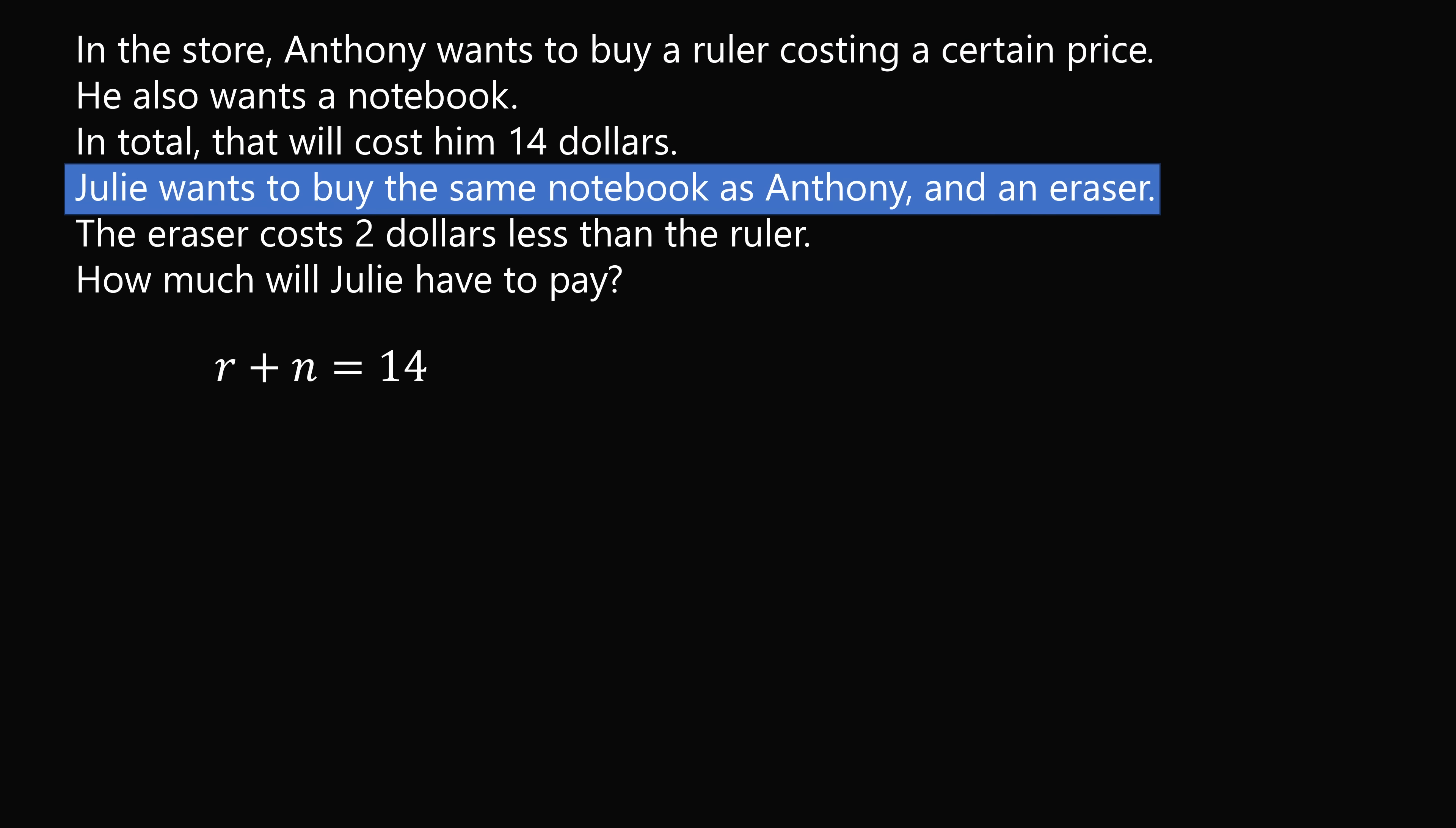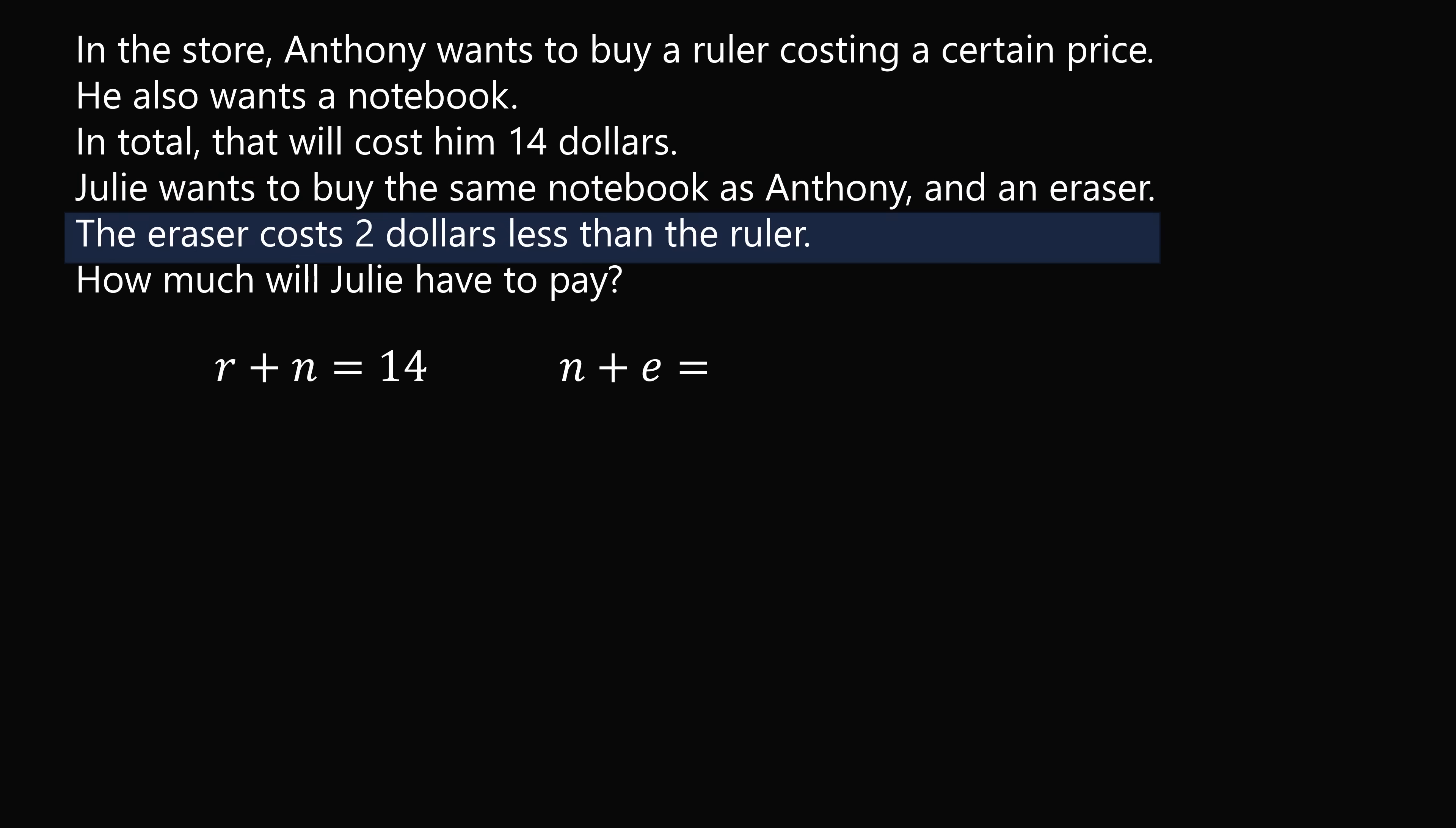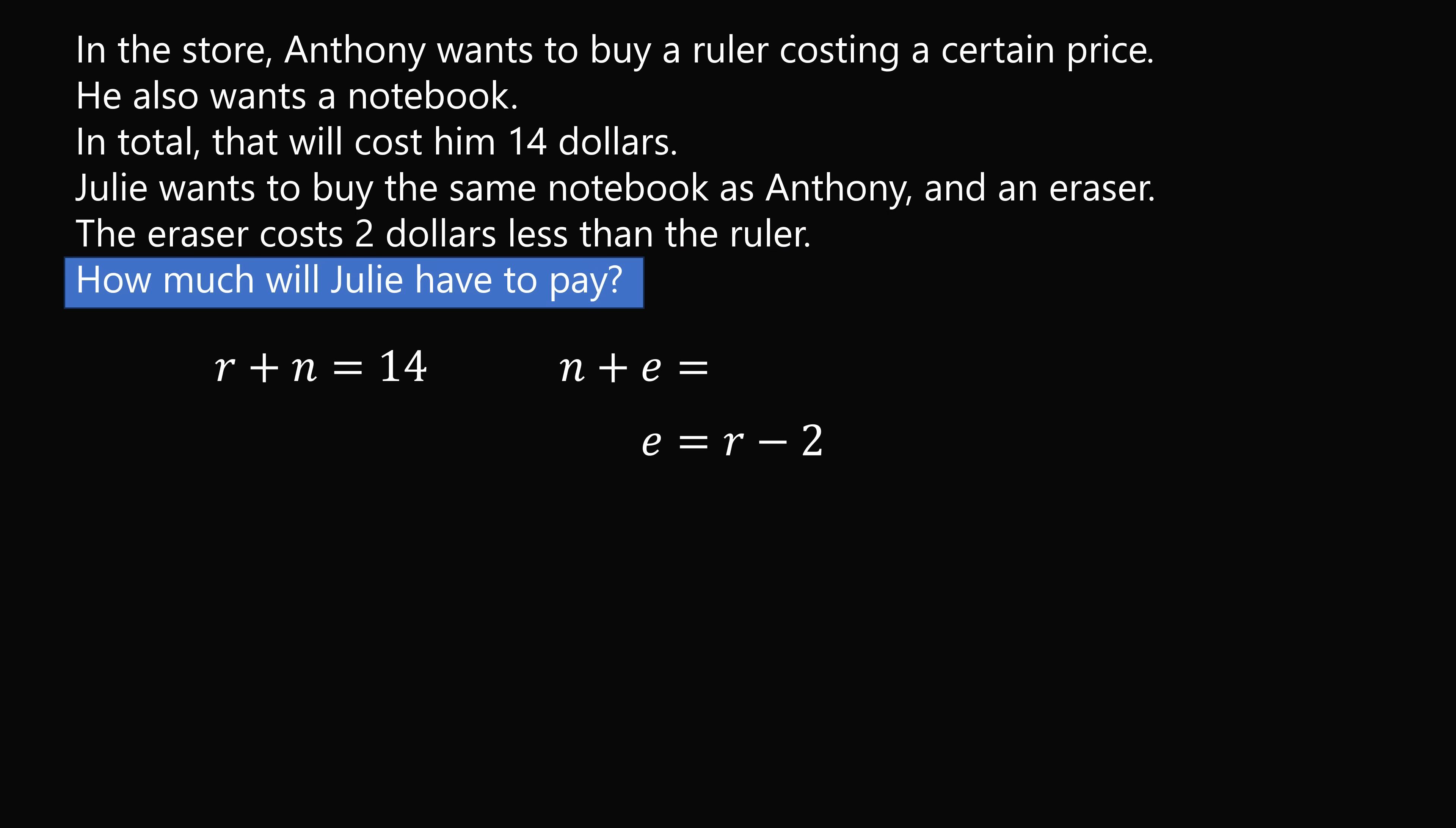Julie wants to buy the same notebook as Anthony and an eraser. So we can denote this as n plus e. The eraser costs $2 less than the ruler. So e is equal to r minus 2. How much will Julie have to pay? Well, we will substitute in for e. So we have n plus r minus 2. But then n plus r is equal to r plus n, which is equal to 14.